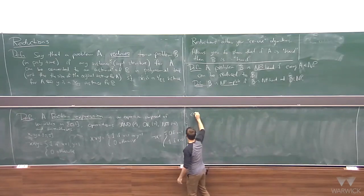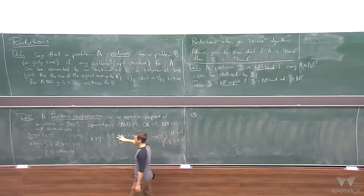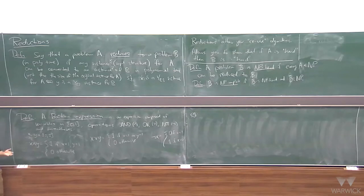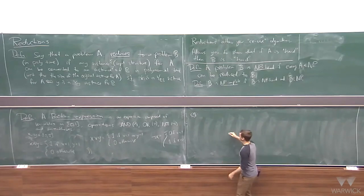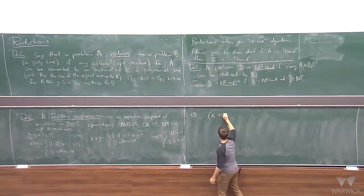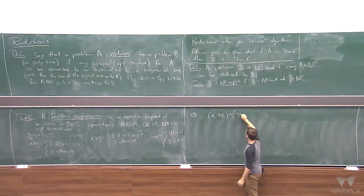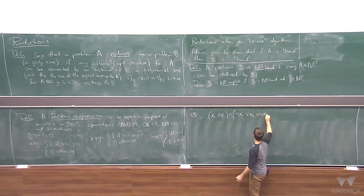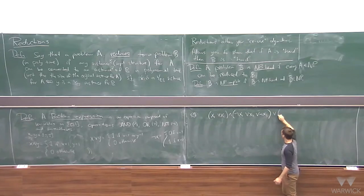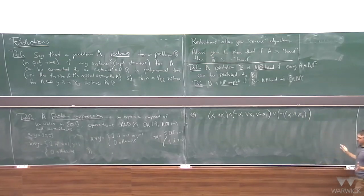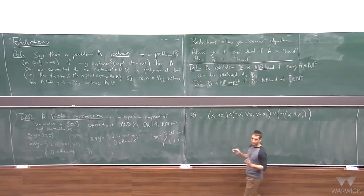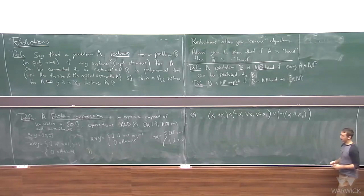A Boolean expression needs to be a proper mathematical expression. For example: (x1 OR x2) AND (NOT x1 OR x2 OR NOT x3) AND (NOT x1 AND x3). That's an example of a Boolean expression. The parentheses help avoid ambiguity — you evaluate from innermost parentheses outwards.